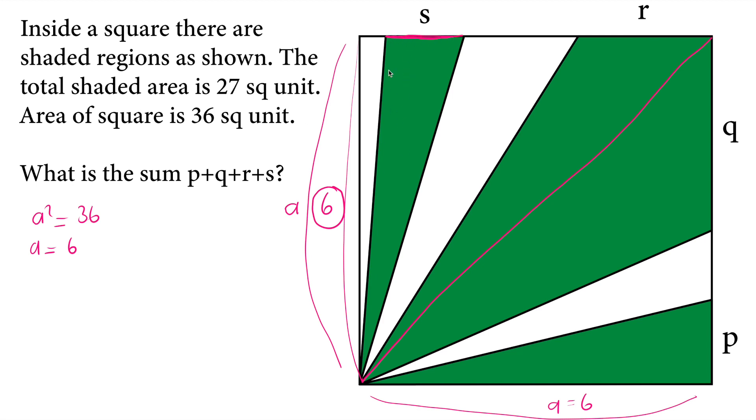And we can calculate the area of this triangle. It will be one half times base S and height 6. And therefore, the area of this triangle right here will be 3S.